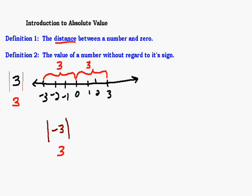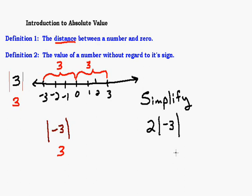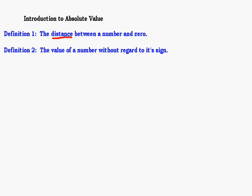A couple other things about absolute value — if you're asked to simplify, sometimes you'll see this in order of operations: say you've got two times the absolute value of negative three, where the two is smashed up against the absolute value symbol. That means multiply, just like with parentheses. So this means two times the absolute value of negative three. The absolute value of negative three is three, so two times three equals six.